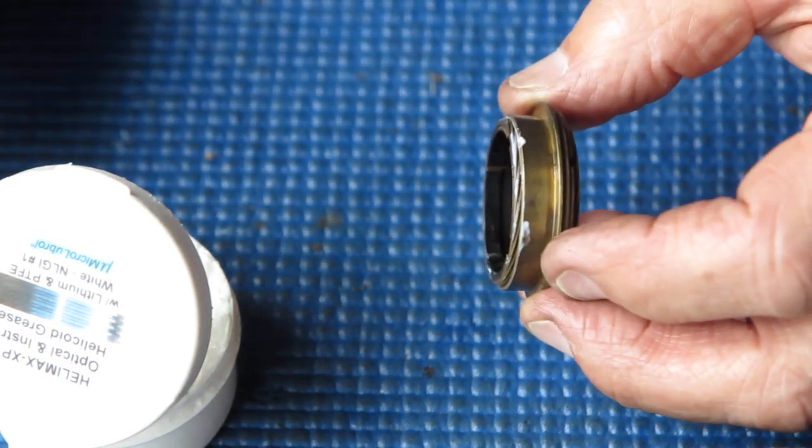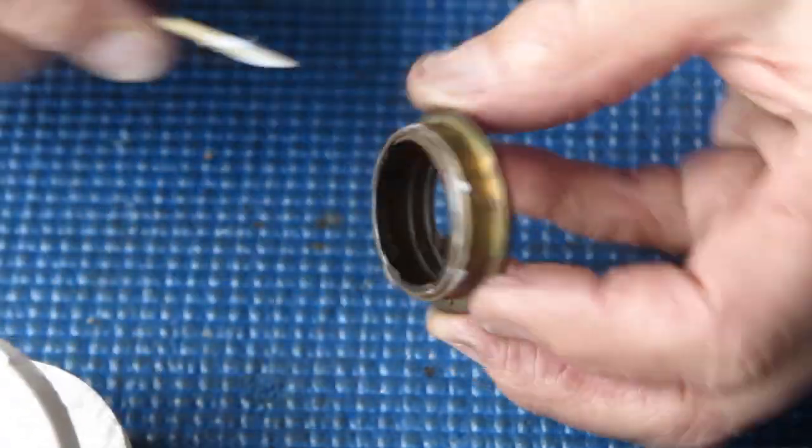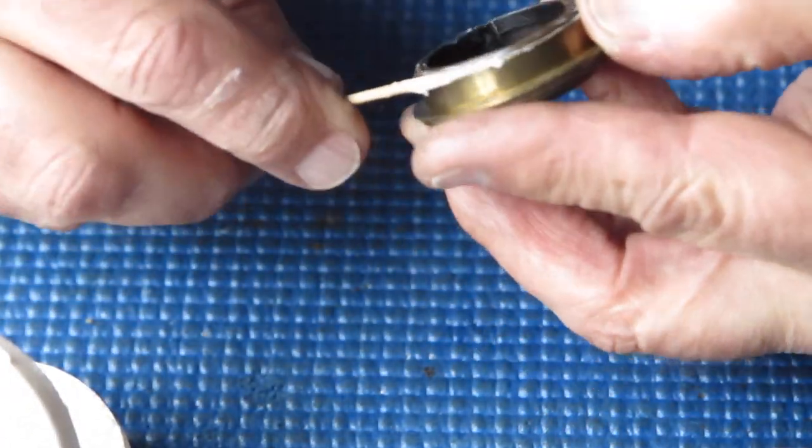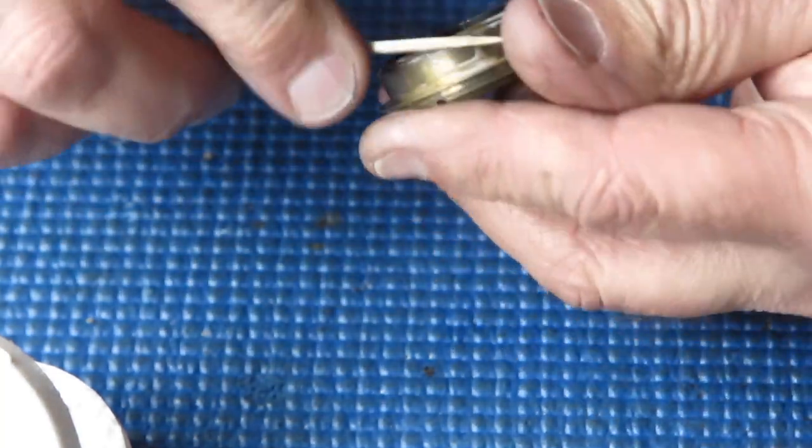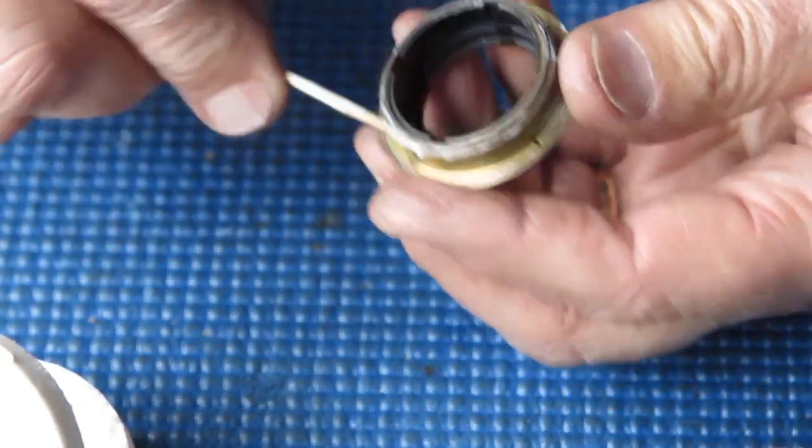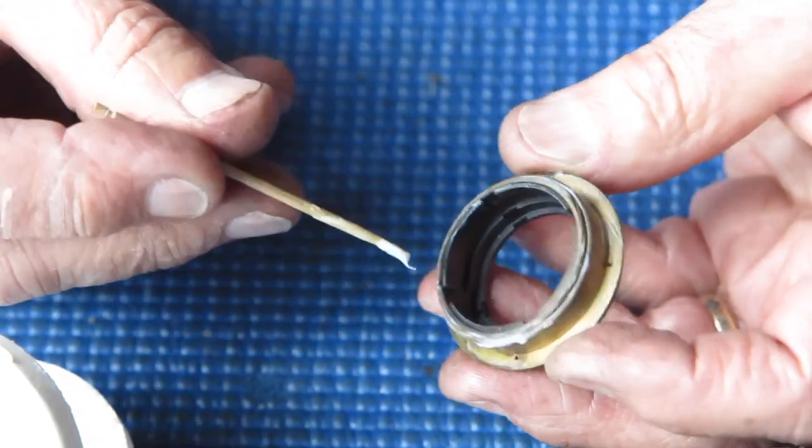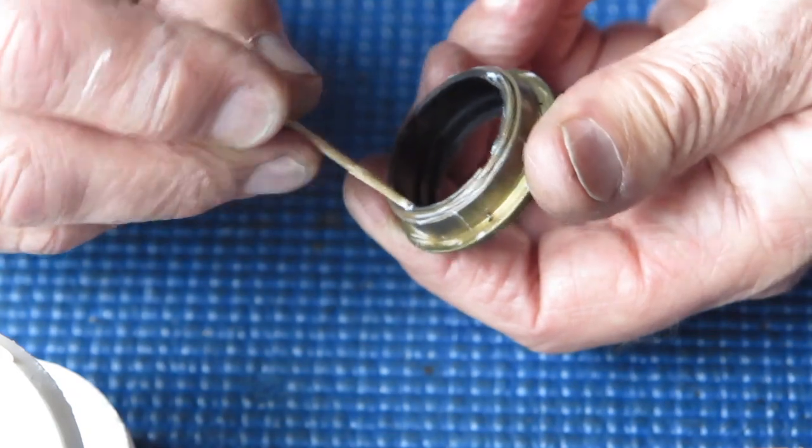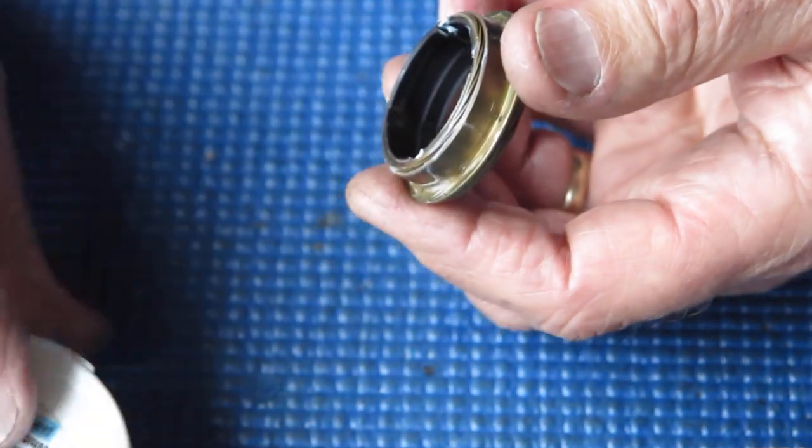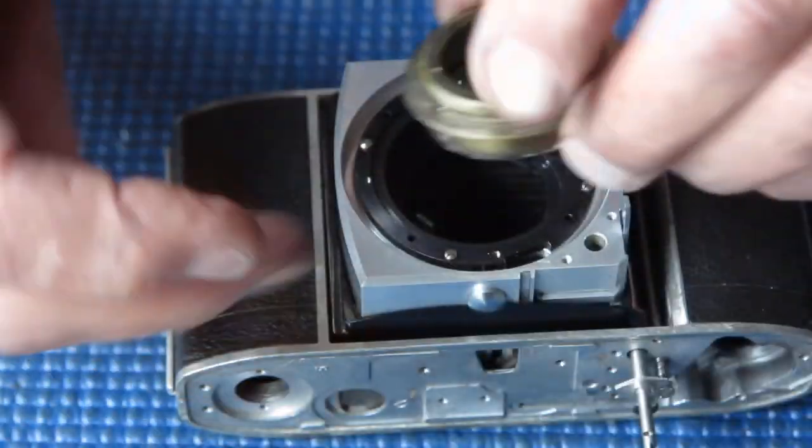And then work that in. That's running nicely. I want some around the outside where this sits in the focus mount. And where it runs on the guides, where the inner runs on those two guide posts, I'll put a tiny bit in there too.